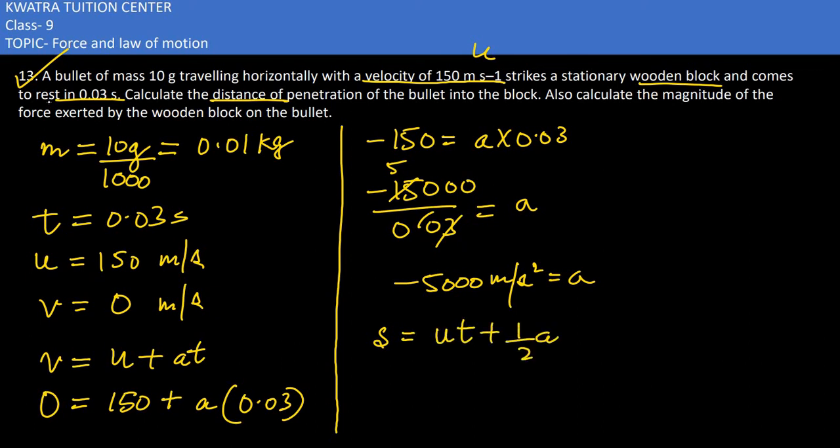S is equal to UT plus half AT square. U in this case is 150, time in this case is 0.03, half A is minus 5000, and T square is 0.03 square.